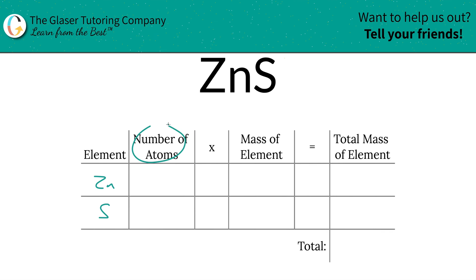Next is to identify the number of atoms. That's where the subscripts come into play. If there is no subscript, just put in a one. So there's one zinc, one sulfur.